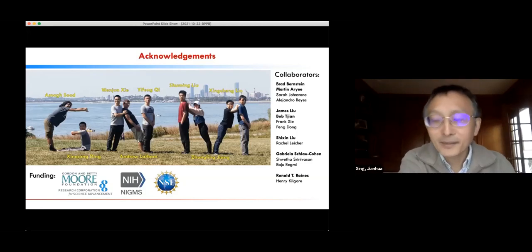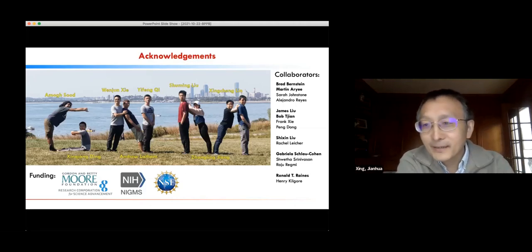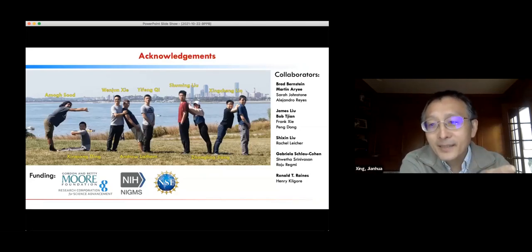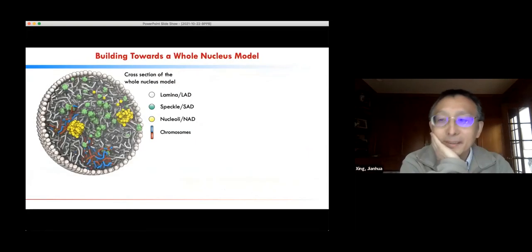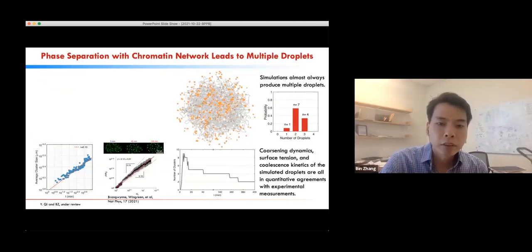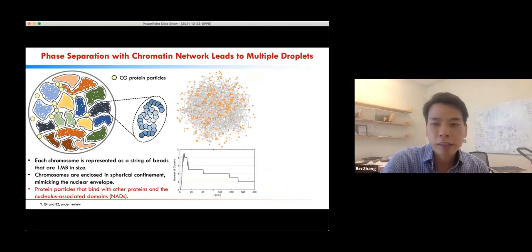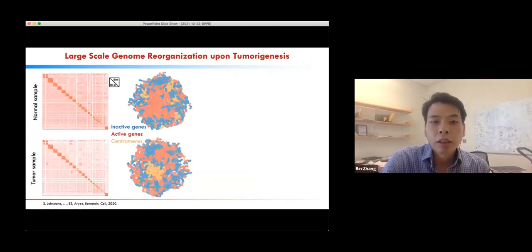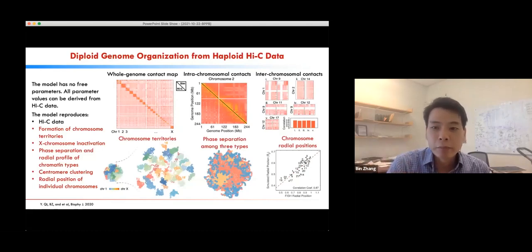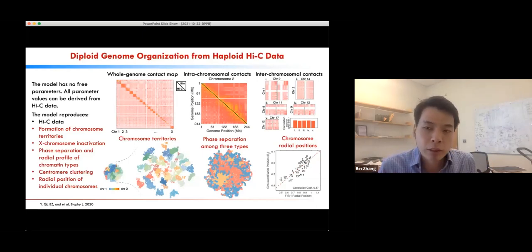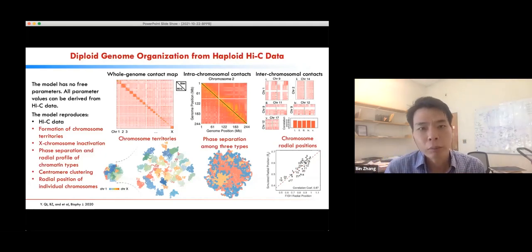Exciting talk. There are a lot of questions. Robin Buscema asks: by starting with the Hi-C map, are you not introducing by hand the incomplete phase separation that you are wanting to explain? The Hi-C more or less tells you about this phase separation, that is correct. But Hi-C does not tell you much about the nuclear body phase separation. The fact that we were able to reproduce the phase separation of chromosomes is totally from the Hi-C data.